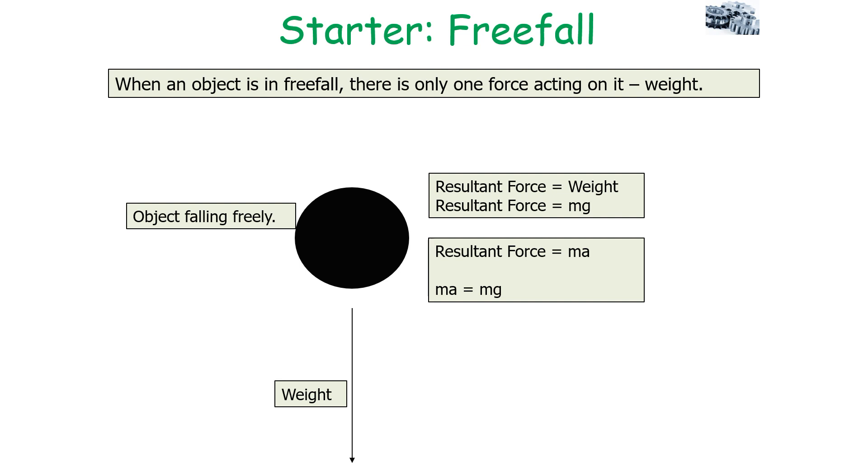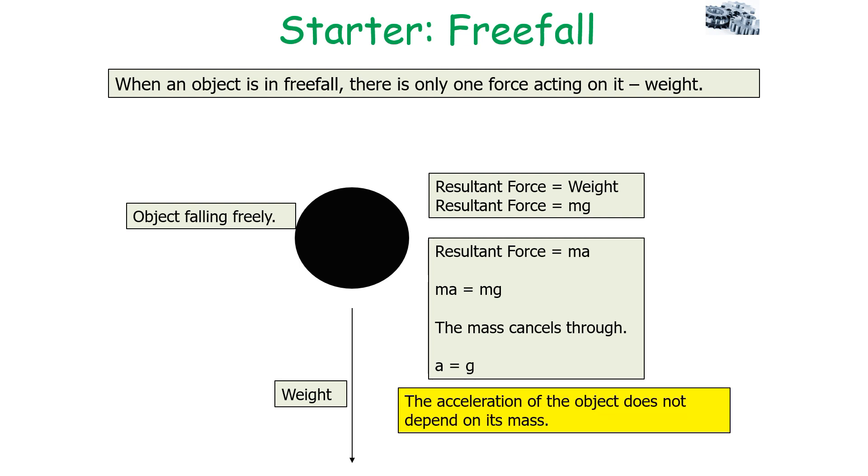We can now equate the idea that resultant force equals weight to ma = mg. You'll notice that m is a common term on both sides of the equation, so m will cancel through to give us a = g. From this, we know the acceleration of the object does not depend on its mass, but the acceleration will only depend upon the strength of gravity g. At the surface of the Earth, the acceleration of all objects towards the center is the same.